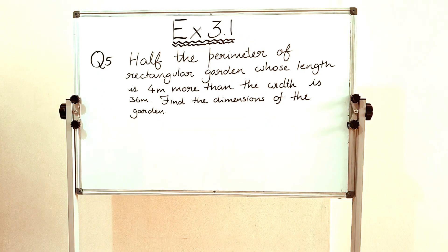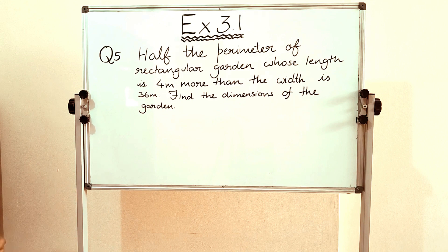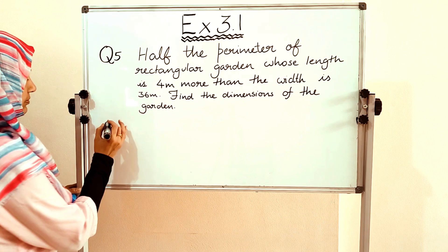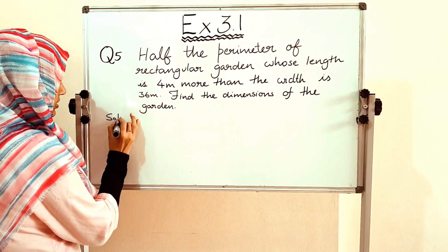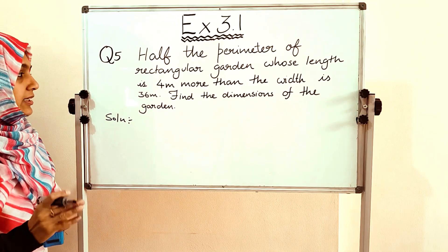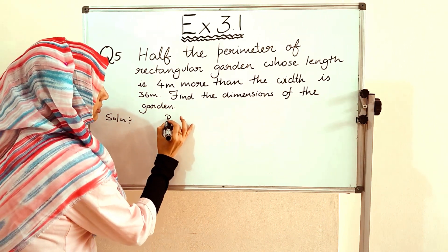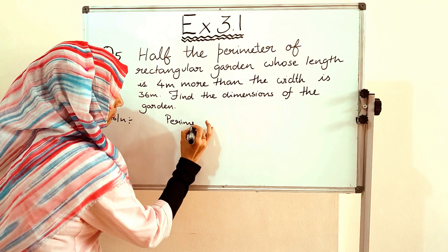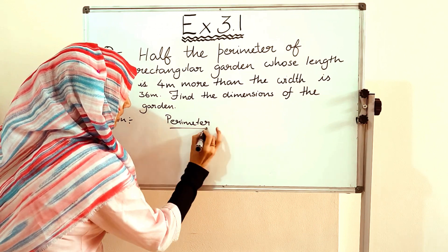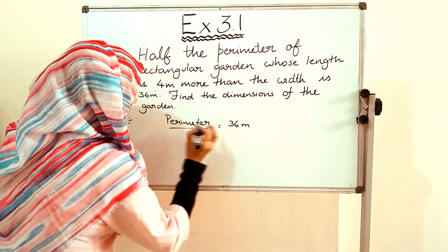Question number 5 is: half the perimeter of a rectangular garden whose length is 4 meters more than the width is 36 meters. Find the dimensions of the garden. So, half the perimeter of the rectangular garden is 36 meters, meaning perimeter divided by 2 is equal to 36 meters. This is given.